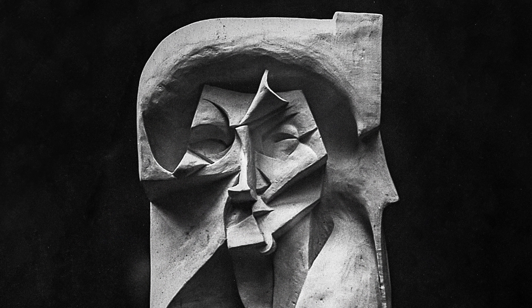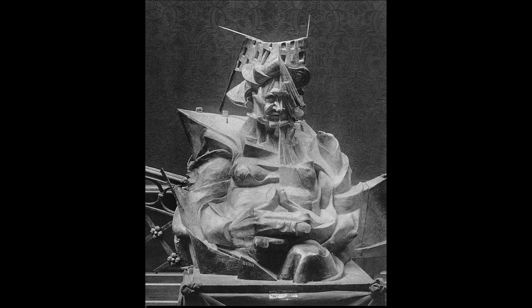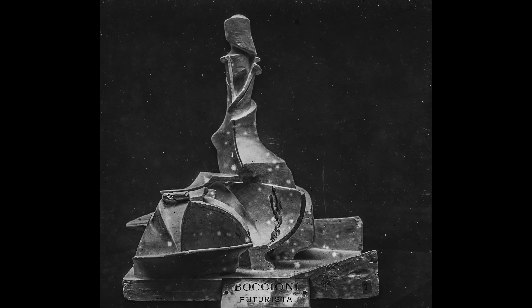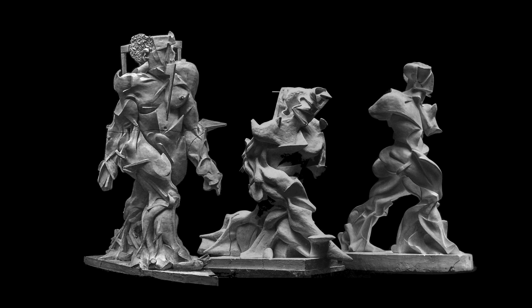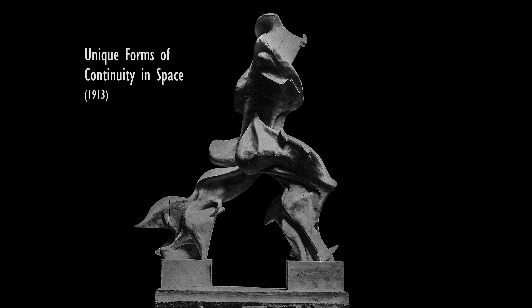Umberto Boccioni is widely acknowledged as the most significant visual artist associated with the futurist art movement. Many of his revolutionary plaster sculptures were accidentally destroyed in 1927, including three precursors to one of the most iconic futurist sculptures — a striding human known as Unique Forms of Continuity in Space.